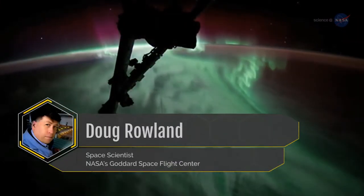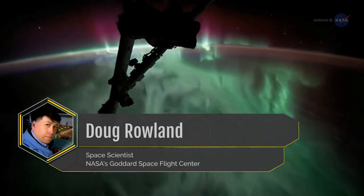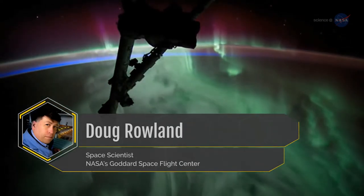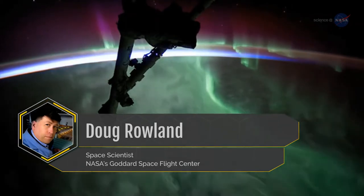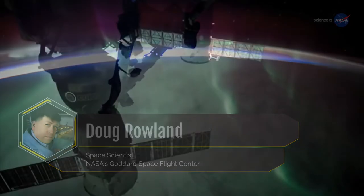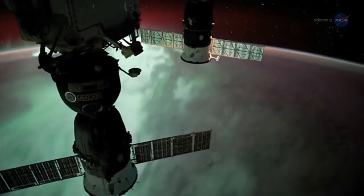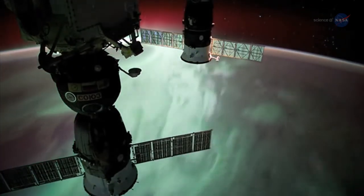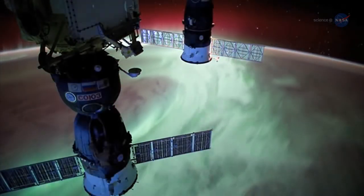Doug Rowland, a space scientist at NASA's Goddard Space Flight Center, explains, The CUSP is a great natural laboratory to understand how Earth's atmosphere responds to direct energy input from the solar wind. This kind of science can be done nowhere else on Earth.